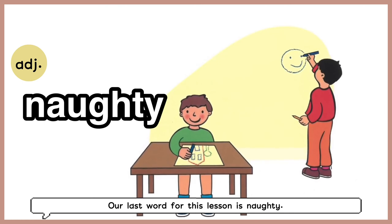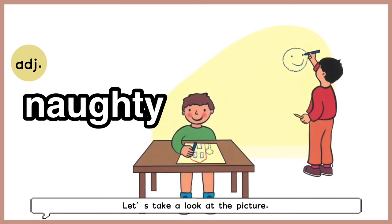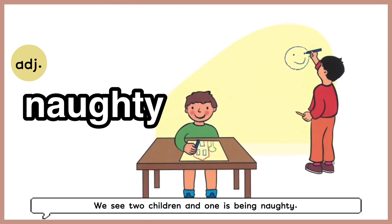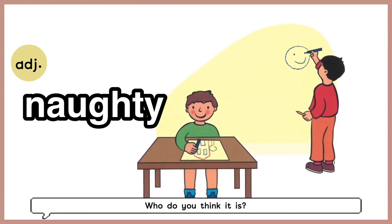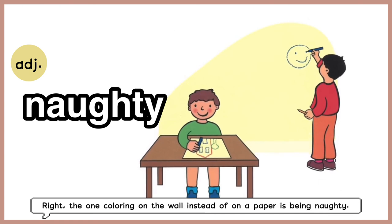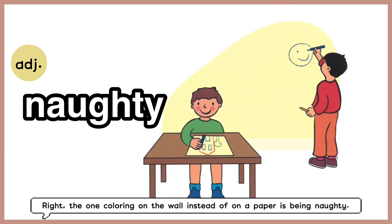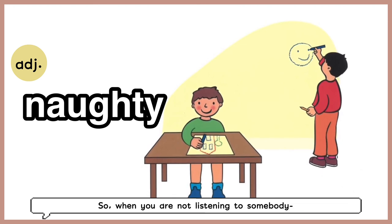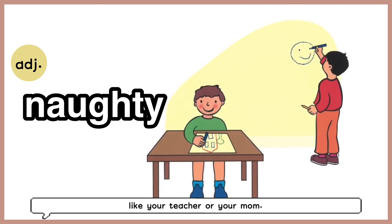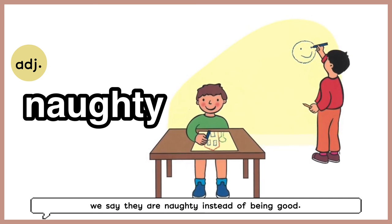Our last word for this lesson is naughty. Let's take a look at the picture. We see two children and one is being naughty. The one coloring on the wall instead of on paper is being naughty. So when you're not listening to somebody like your teacher, your mom would say you're naughty instead of being good.